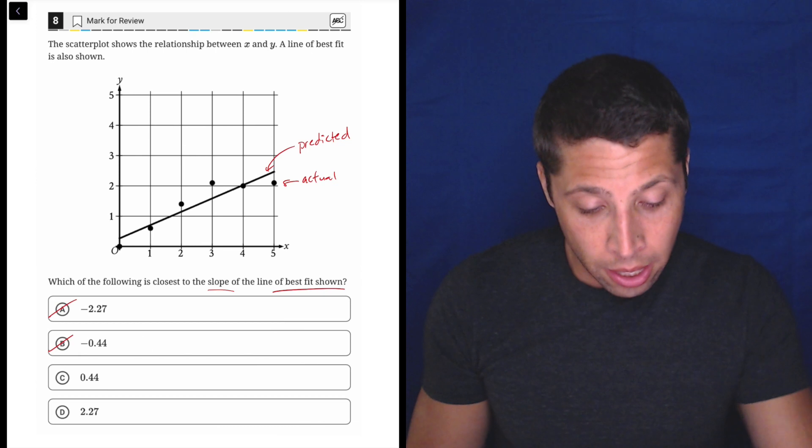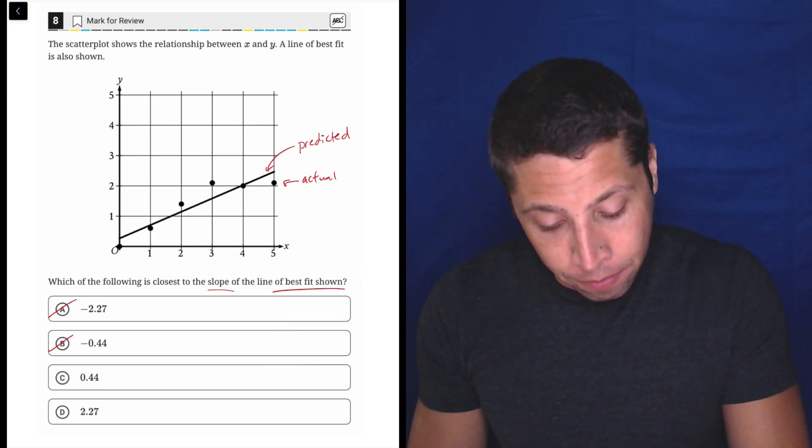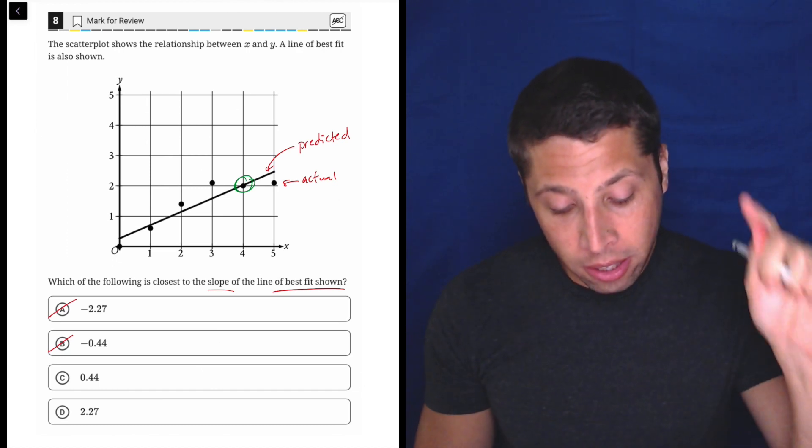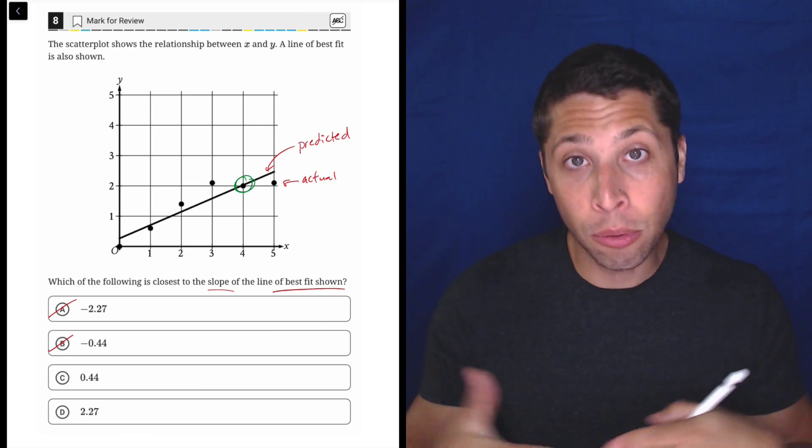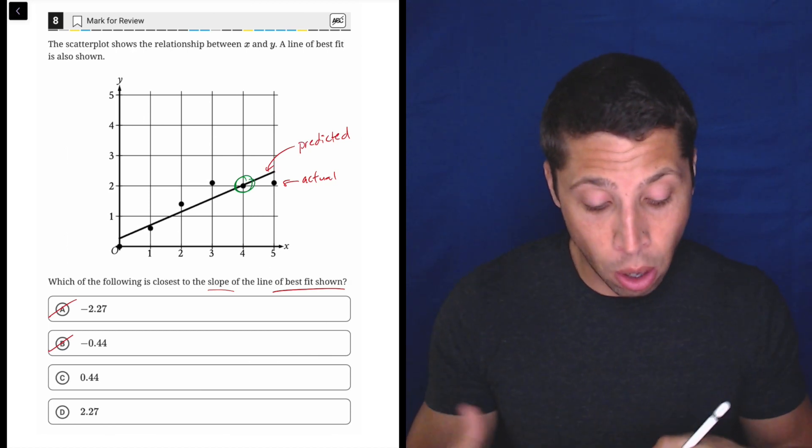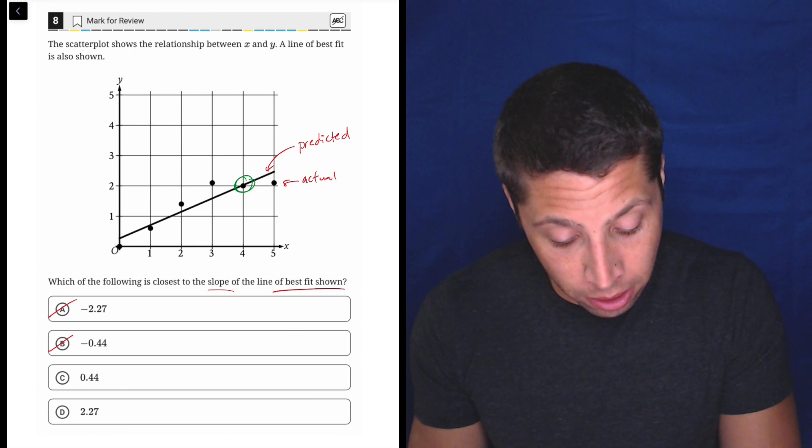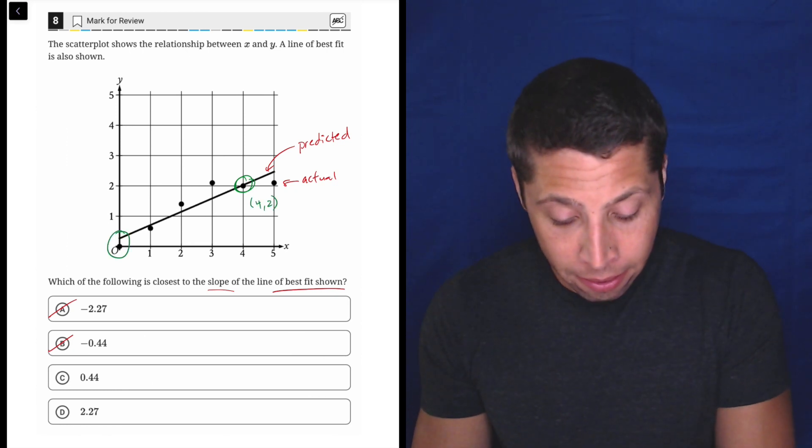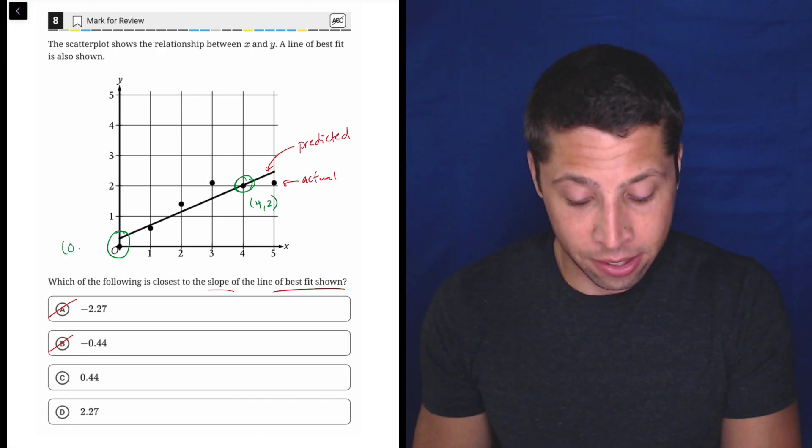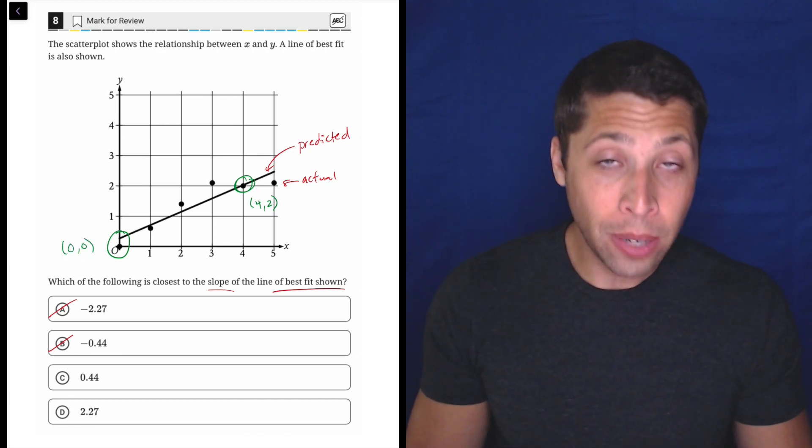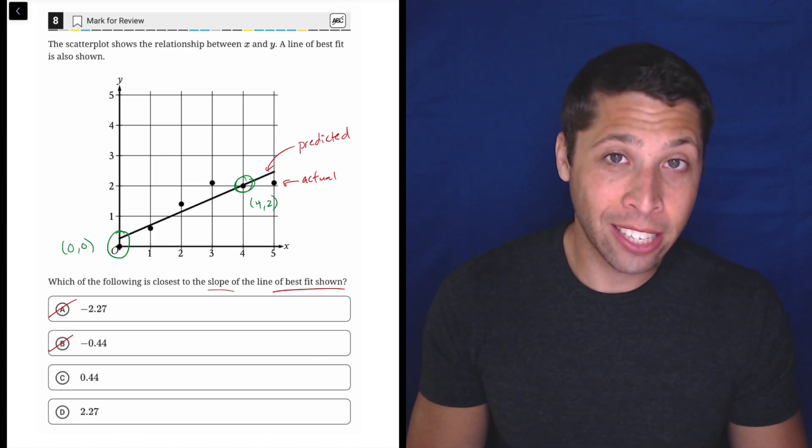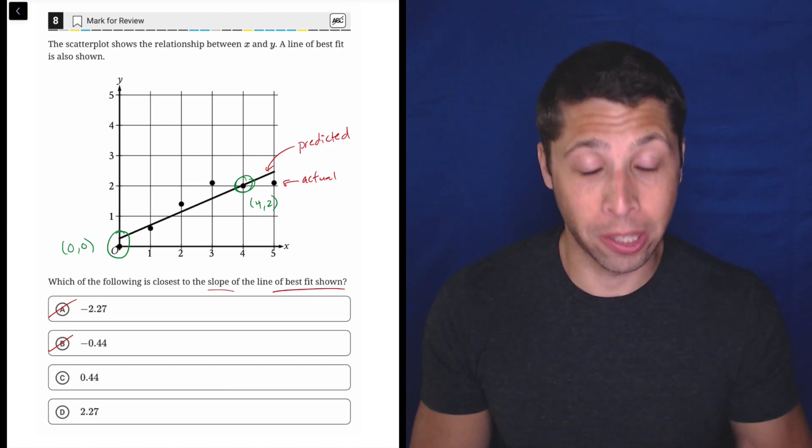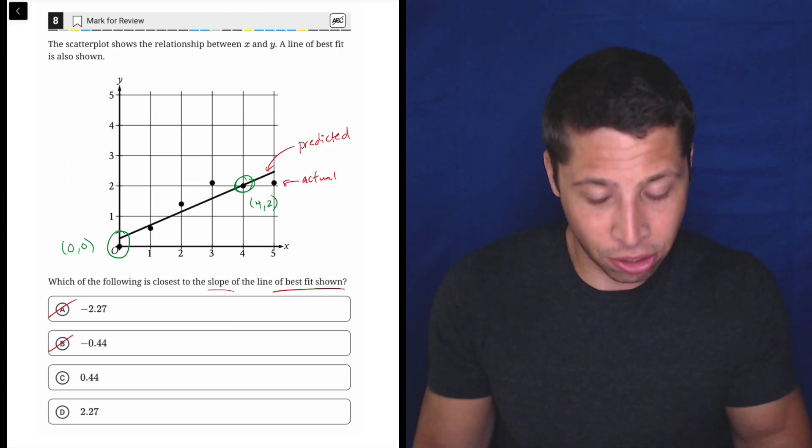So what I would do is I would pretend that yes, this point here is really convenient, not because the dot is there, but because the line goes right through an easy to read coordinate. It's going right through the corner of a box. So the coordinate here is 4, 2. I would pretend that the y-intercept of this line is 0, 0. The reason is that it's so close. And then I can just count the boxes on the line, on the graph instead of having to do the slope formula. I'll review the slope formula anyway, but let's just look at this here.